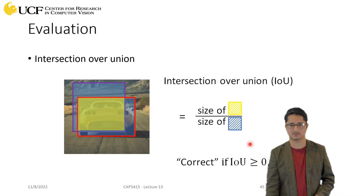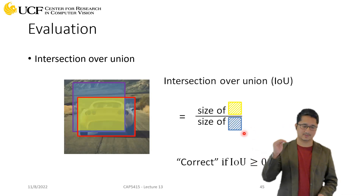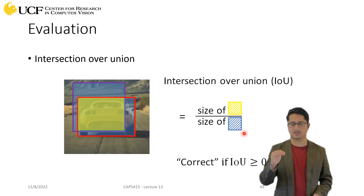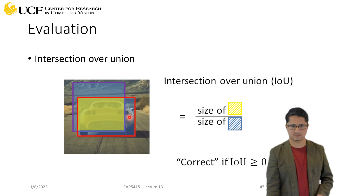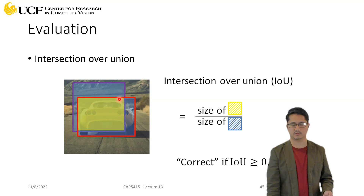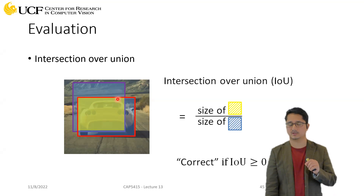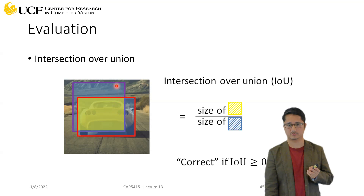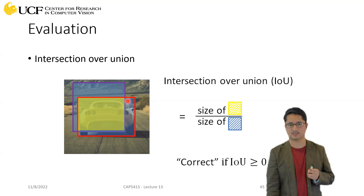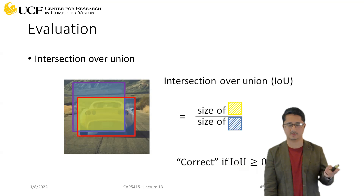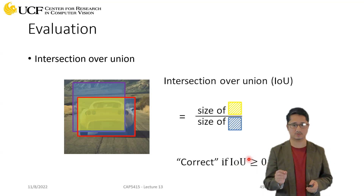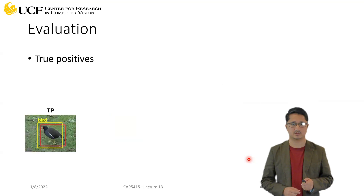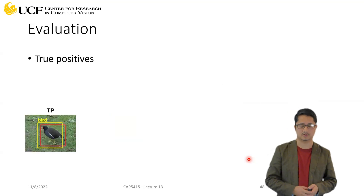This threshold is for evaluation. If you set the threshold of 0.5, you will have the ground truth — let's say the red box — and the purple box is your network's prediction. You compute IoU, and this prediction is only correct in two scenarios: the class label should be correct, and the IoU score should be greater than 0.5. That's the threshold we use for evaluation.